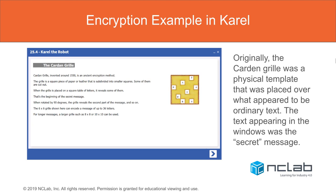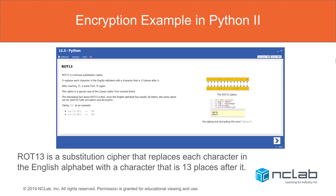An encryption example in Carol — this is from the fifth unit in Carol, one of the last exercises. It uses something called the card and grill: literally a template made out of leather with holes in it. When someone sent you their secret message, you put your leather template over it and read off those letters, then turned it around and read more. The instructions in Carol mention that a six-by-six grill — six rows by six columns — could be used to encode a message up to 36 letters. This is one of our offline activities. In Python 2, section 12 related to ASCII study, there's the ROT13 code, which is a substitution type of cipher.